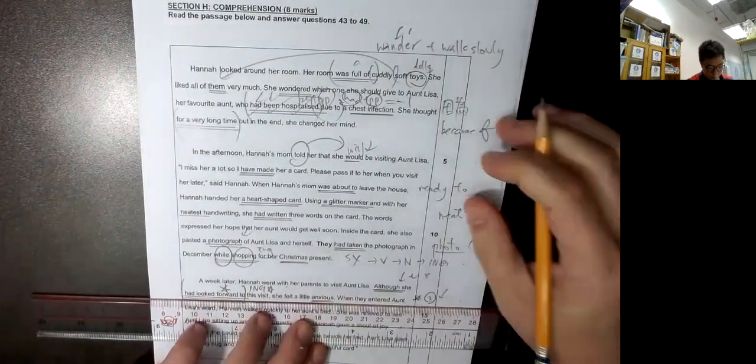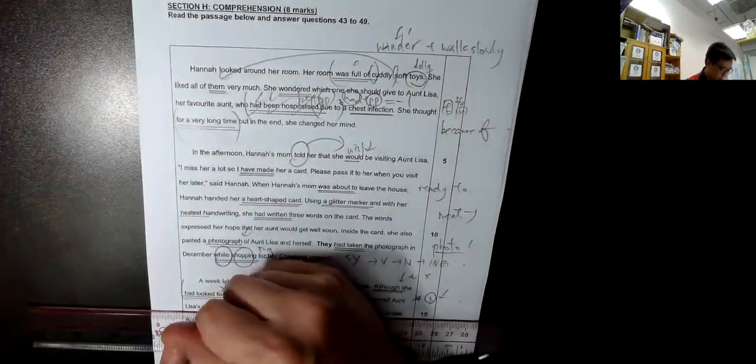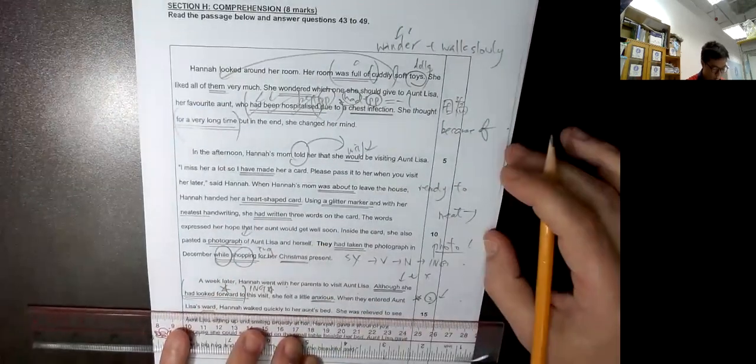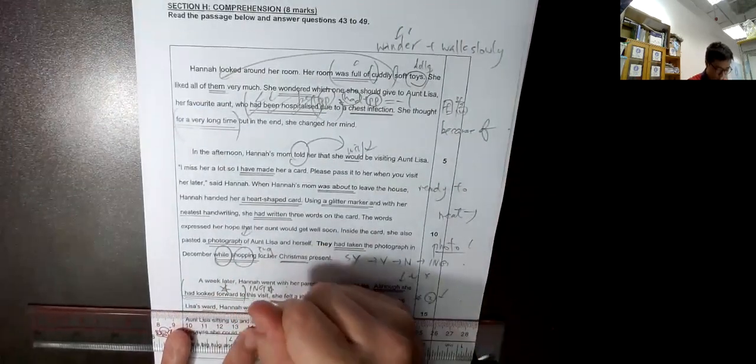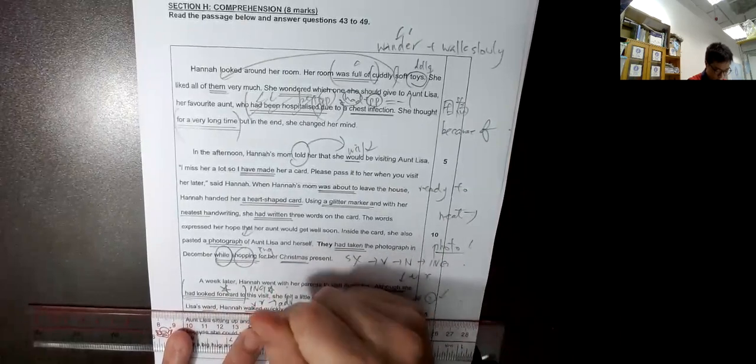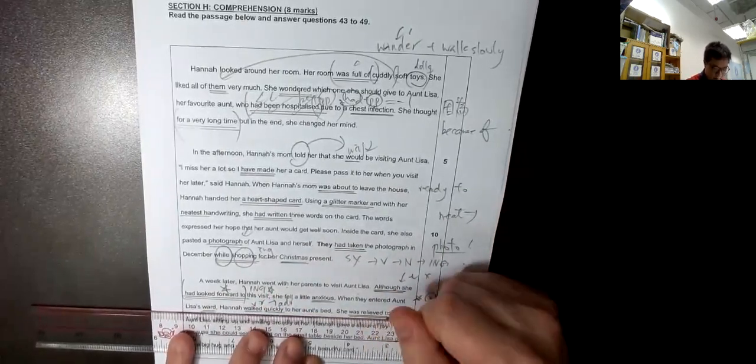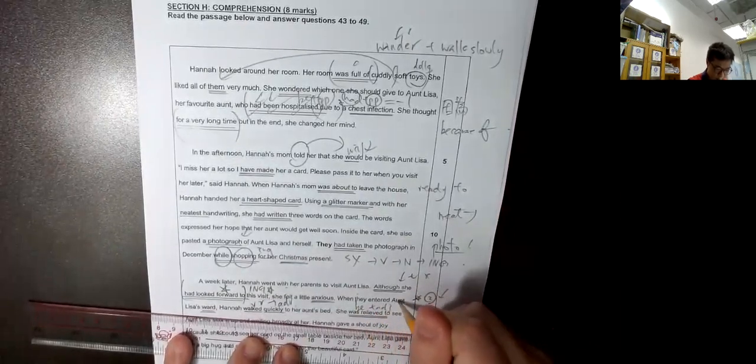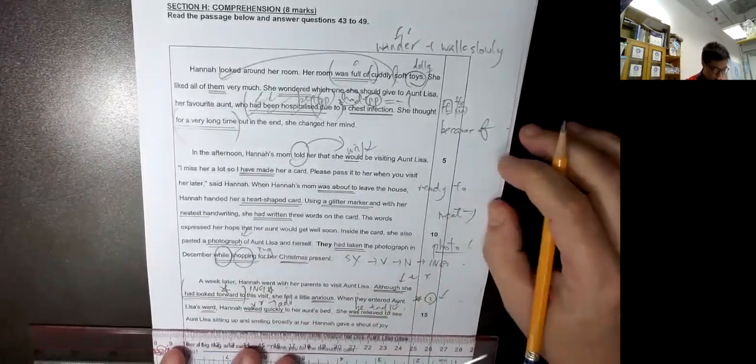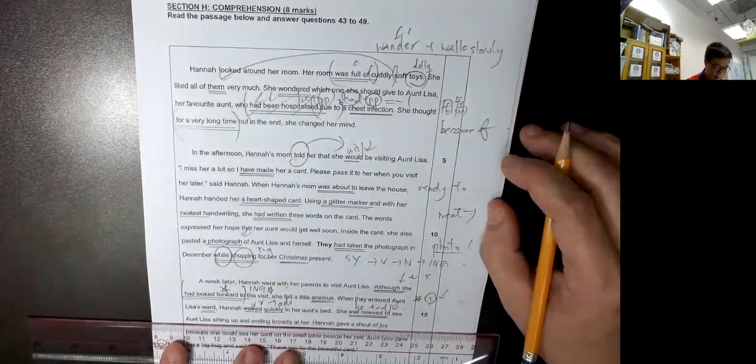很焦慮. When they enter Aunt Lisa's ward, 病房 ward. Hannah walked quickly. Walked is 第二類動詞, 答 Ever. Quickly. To her aunt's bed, she was relieved. 鬆一口氣. 鼻加應用器. 應用器放在鼻後面. To see Aunt Lisa sitting up and smiling broadly at her.